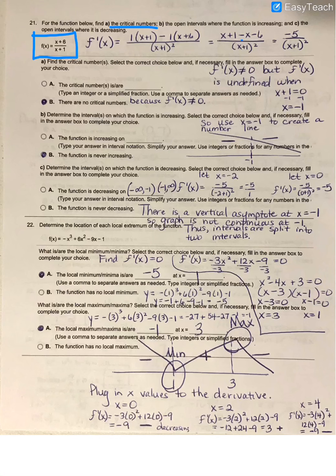So if I take the derivative of the top, I get simply a 1 multiplied by the bottom, which is x plus 1, minus the derivative of my bottom, which is 1, multiplied by the top, all divided by the bottom part squared. If you distribute that negative 1, you'll notice these x's cancel each other out. So we are left with a negative 5 over x plus 1 squared.